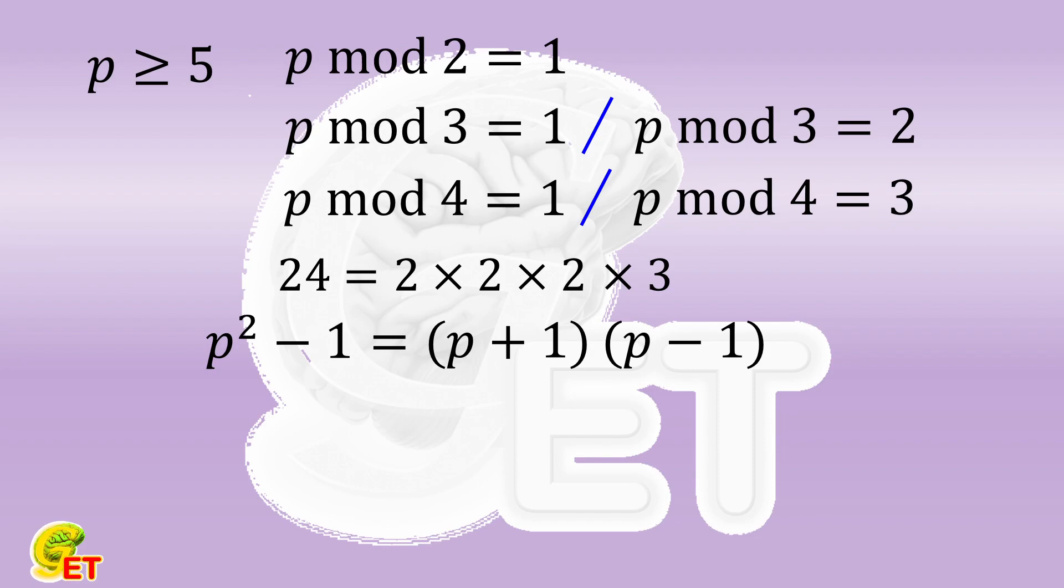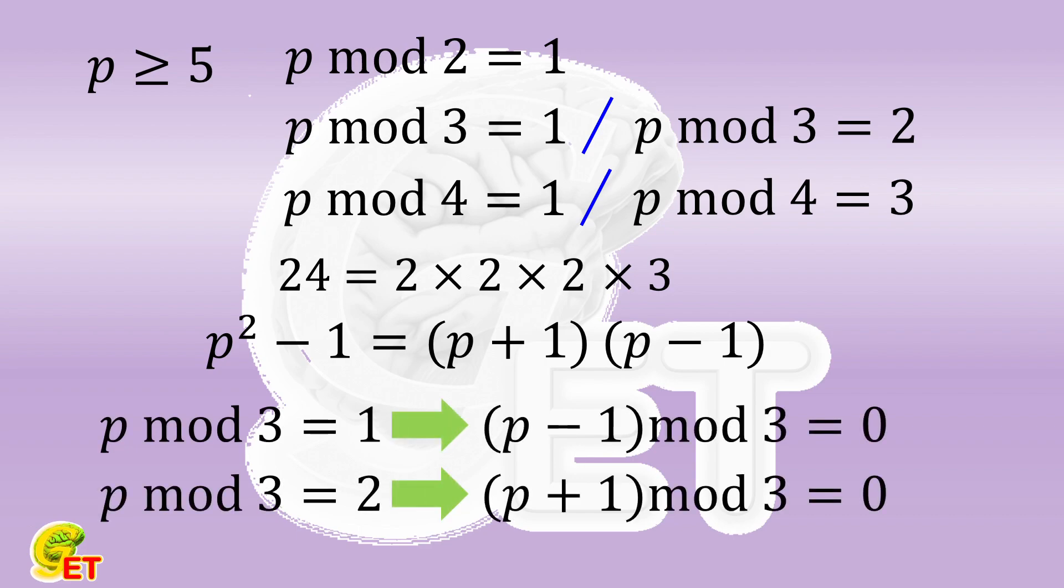Let's first look at the case of dividing p by 3. If the remainder is 1, then p minus 1 is divisible by 3. If the remainder is 2, then p plus 1 is divisible by 3. So in any case, the square of p minus 1 is always divisible by 3.